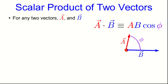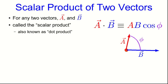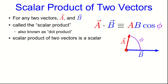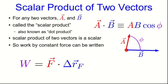This work expression is an example of a new operation between two vectors. We know how to add and subtract vectors and multiply vectors by scalars, but here we're seeing a type of multiplication of two vectors called the scalar product. For any two vectors a and b, a dot b is defined as the magnitude of a times the magnitude of b times the cosine of the angle between them. This is called the scalar product, also known as the dot product, and it yields a scalar result. So work can be written simply as the dot product of the force vector with the force displacement vector.